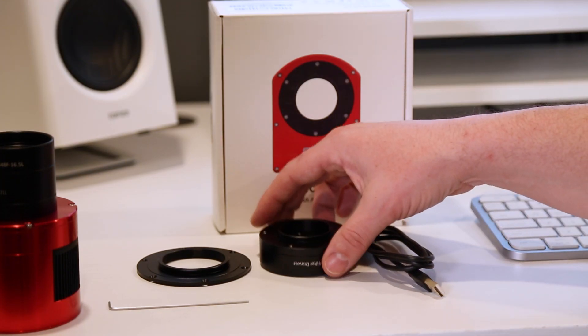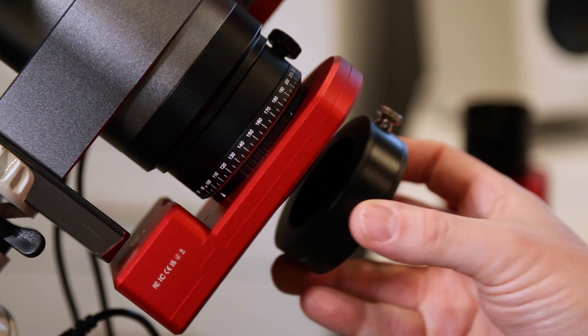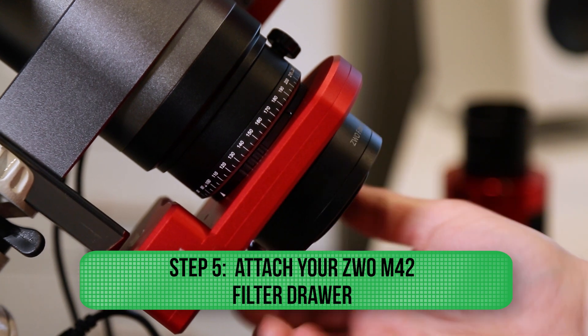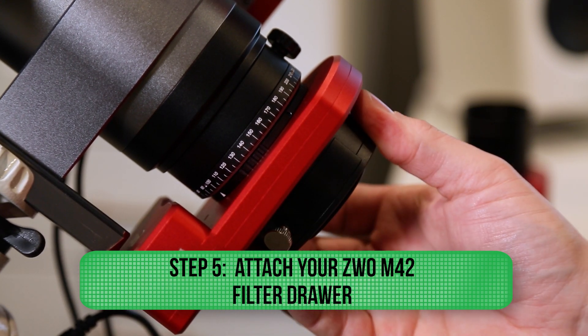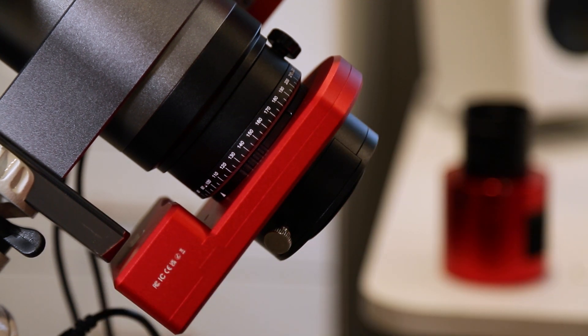So now we can thread on our solution of the M42 filter drawer, which has the M48 threads on the camera angle rotator side. So we'll thread that on as well. Just hand tight again. Do not over tighten it.